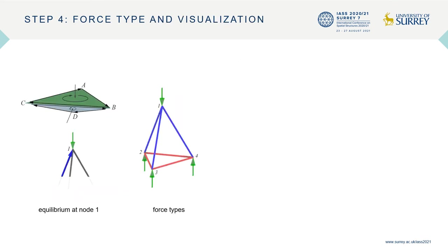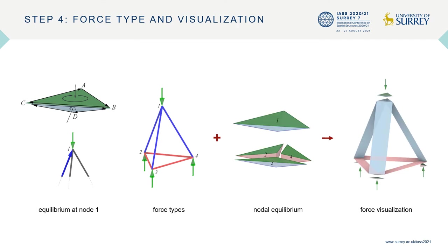The type of forces — tension or compression — can also be defined. For example, considering cell 1 of the force diagram, which is reciprocal to node 1 in the form, the normal vector of face C, B, D pointing towards node 1 means that its reciprocal truss member is in compression. Additionally, force visualization can be achieved by the geometrical addition of the form and scaled force diagram using Minkowski sum.